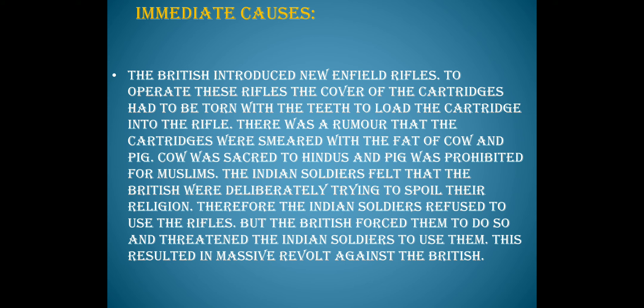Next comes the immediate cause. The immediate cause of the Revolt of 1857 was the cartridges of the new Enfield rifle. The paper cover of the cartridge had to be bitten off before loading into the rifle, and it was said that the greased paper was made of beef and pig fat. Both Hindus and Muslims refused to use them, as the cow is sacred to Hindus and the pig is detestable to the Muslim community. That was the immediate cause of this revolt.